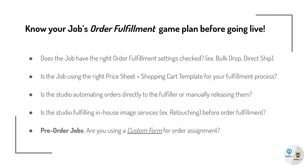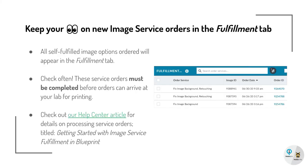For pre-order studios, are you using a custom form on your job for order assignment? This is especially critical as it's needed to capture that specific data to assign your orders to your subjects. You'll also want to make sure you're keeping your eyes on new image service orders in the fulfillment tab. All self-fulfilled image options ordered will appear in Blueprint's fulfillment tab waiting for processing.